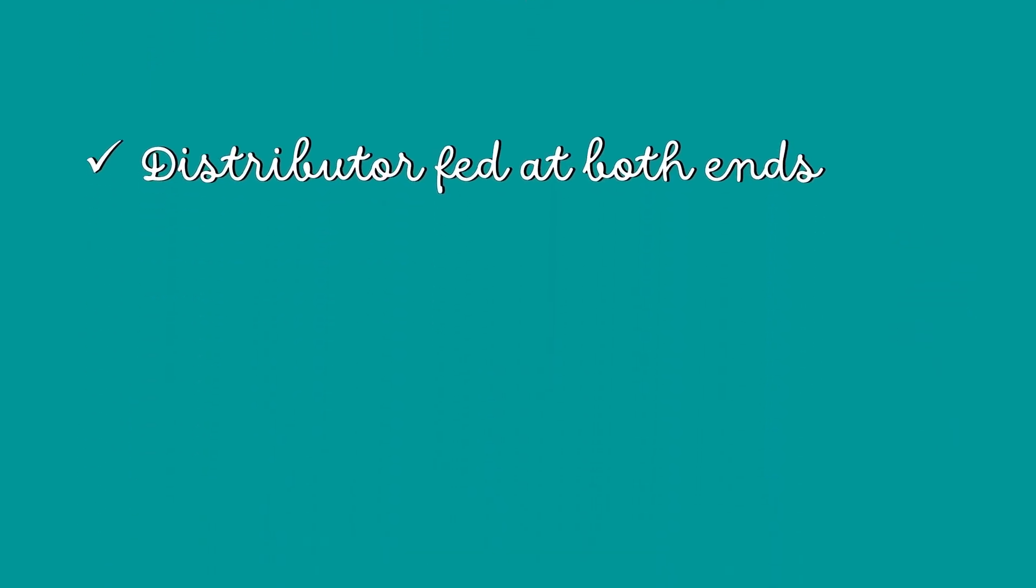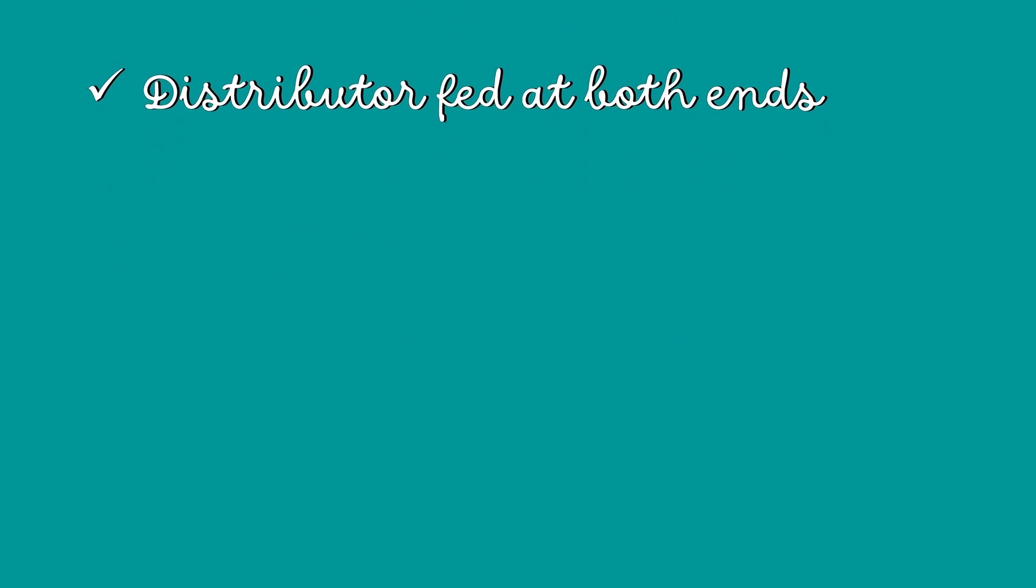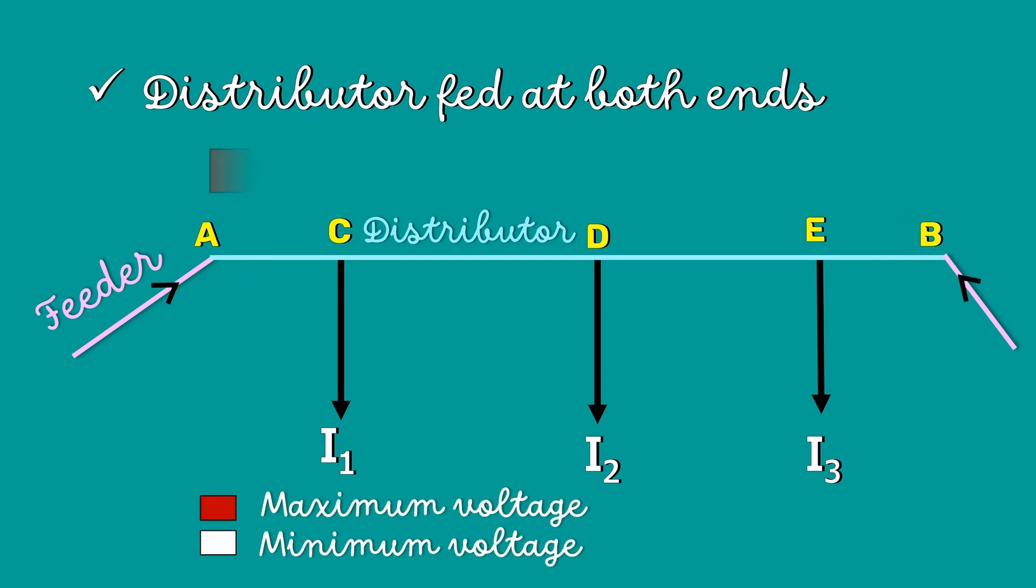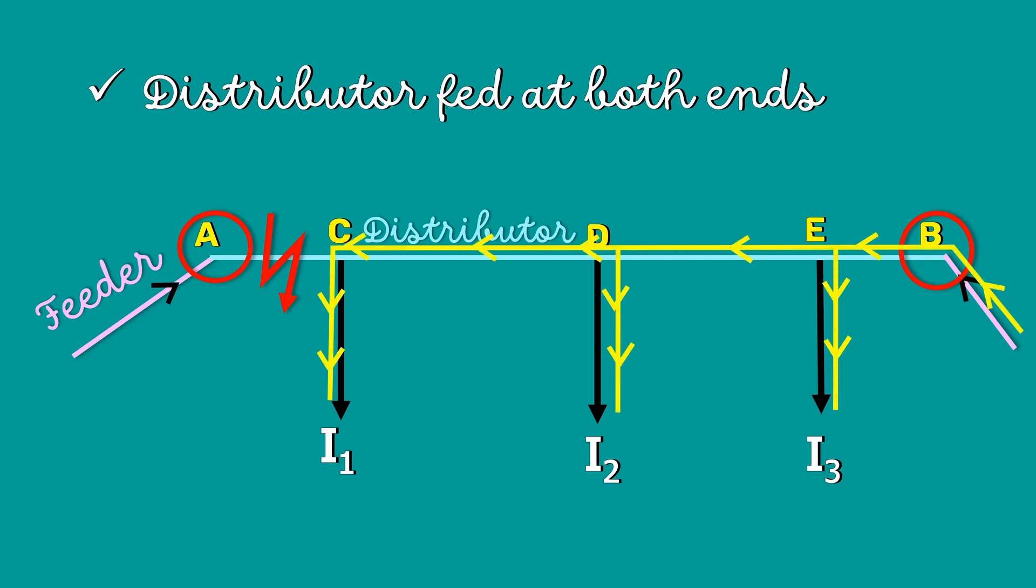The second type is the distributor fed at both ends. In this type, the distributor is connected to the supply at both ends. The voltage at the feeding point may or may not be equal. Here, the load voltage goes on decreasing as we move away from one feeding point, reaches a minimum value and then starts rising and reaches the maximum value. Since the distributor is fed at both ends, in the case of fault, the continuity of the supply is maintained.